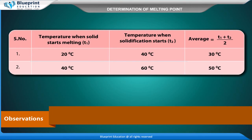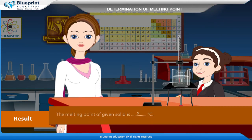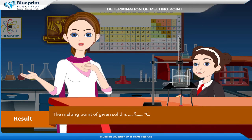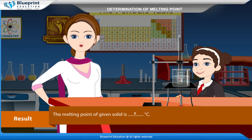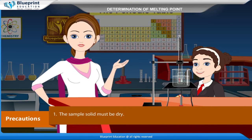Observations: Serial number — Temperature when solid starts melting (T1), Temperature when solidification starts (T2), Average = (T1 + T2) / 2. Result: The melting point of the given solid is x degrees Celsius.